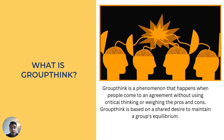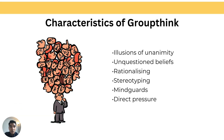Today I would like to share about groupthink. Groupthink is a phenomenon that happens when people come to an agreement without using critical thinking or weighing pros and cons. It is a basic desire to maintain group equilibrium. Groupthink affects how influential decision makers operate within the group. The first characteristic is illusion of unanimity, which can lead the group to doubt their own concerns and misgivings. The second characteristic is unquestioned belief, which can be very dangerous — it makes group members ignore potential negative consequences of their actions. For example, a company can strongly believe in a project and face significant financial loss due to that project failing.